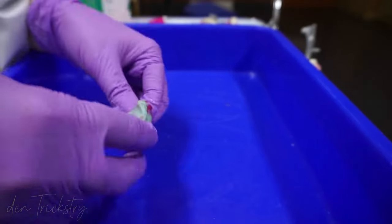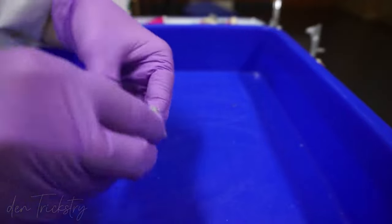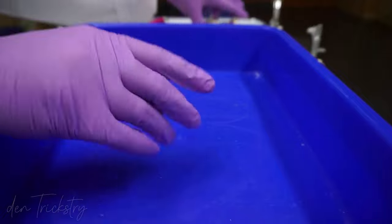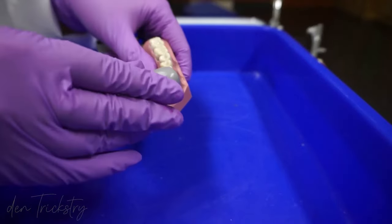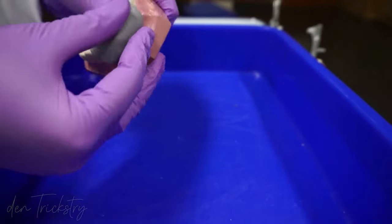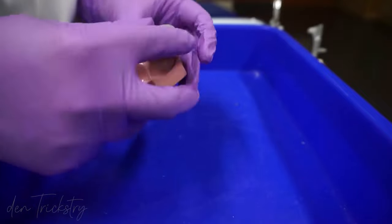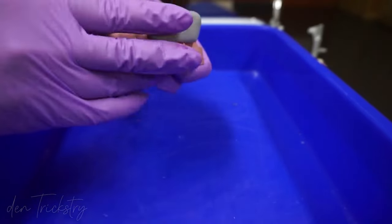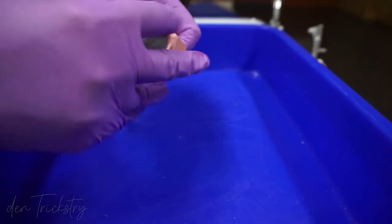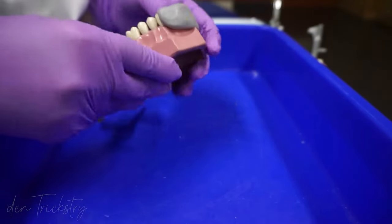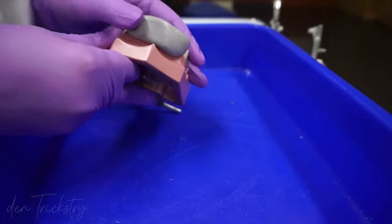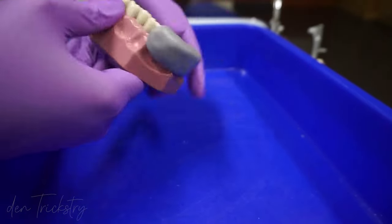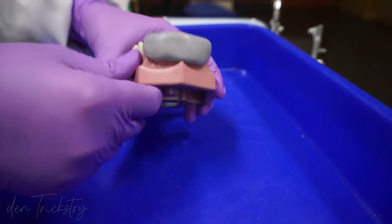After mixing the catalyst with the putty material, I knead it till I get a nice homogenous mix. Once mixed, we have to place the material on the area we want to temporize. In this case, it is the upper anterior tooth which has to be prepared for a crown. Place the material covering the tooth surface entirely and make sure you extend to the adjacent teeth as they are going to serve as the vertical stop and prevent sinking of the index once the tooth is prepared.